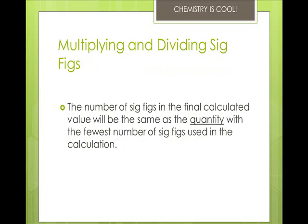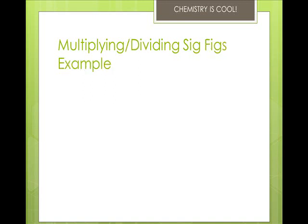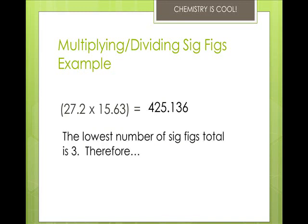When you multiply and divide, it's different than addition and subtraction. The number of significant figures is the same as the lowest number of sig figs total. So let's take a look at this one. We're going to multiply 27.2 times 15.63, and we get 425.136. The lowest number of sig figs total is 3 because 27.2 has 3 significant figures. Therefore, we round and your new answer is 425.